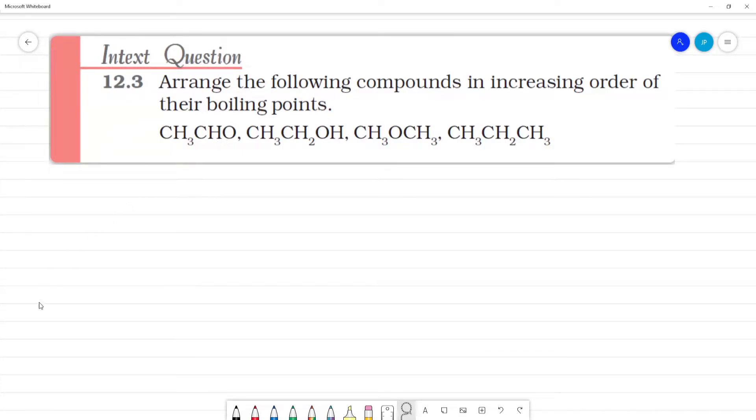Arrange the following compounds in increasing order of boiling points. So, boiling points are different parts of boiling points. Let's look at molecular mass. Increase in molecular mass, increase in boiling point.